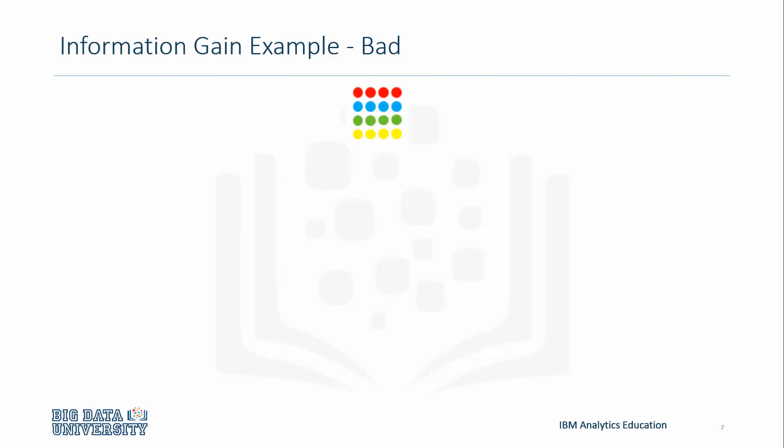Alright, so we just looked at an example of information gain that demonstrated good gain, as well as a more realistic example of it that still presented a decent amount of gain. This time, we'll look at a quick example that demonstrates bad information gain.